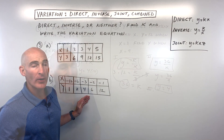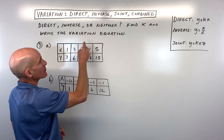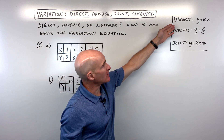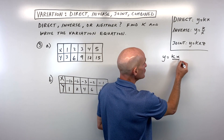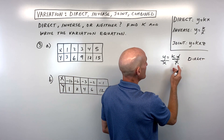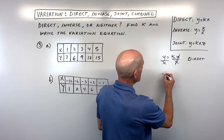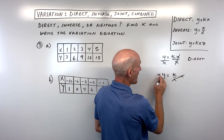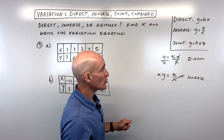For example number 3 we're given two tables — a two-part question A and B. We need to determine if it's a direct, inverse, or neither equation, find the constant of variation k, and write the variation equation. For direct variation y equals kx, solving for k means dividing both sides by x, so y divided by x should give the same constant each time. For inverse variation y equals k divided by x, multiplying both sides by x means x times y should give the same constant each time.